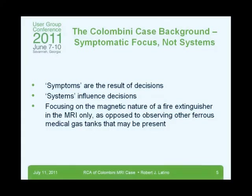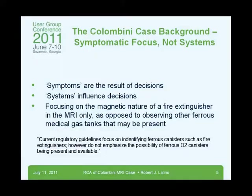Okay, let's look at the elements of this particular case and look at the symptomatic focus versus the systems focus. Symptoms are the results of decisions. So as a result of our decision, it's a consequence of that decision. Systems, on the other hand, influence our decisions. So when we're looking at why we make the decisions we do at the time that we do, they're usually going to be influenced by systems such as our training, our experience, our policies, our procedures, things of that nature. Those are systems that affect our decision making. As a result of our decision making, we trigger symptoms to occur. Focusing on the magnetic nature of a fire extinguisher in the MRI only, as opposed to observing other ferrous medical gas tanks that may be present, is an example of focusing on the symptoms instead of the systems.